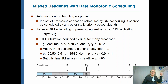But unfortunately, the rate monotonic scheduling algorithm does not look at the deadlines, but looks at the period for the priority. And that's why we missed the deadline for p2, although we still had some slack time for p1.